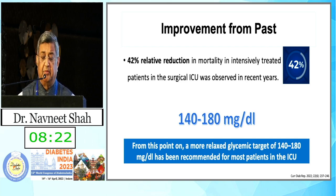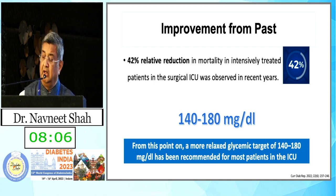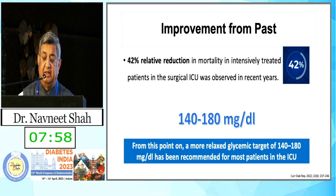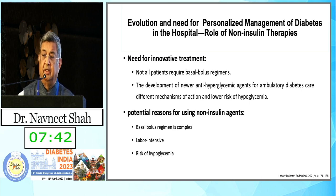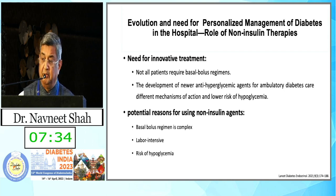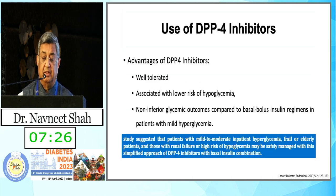We have seen a lot of improvement from the past, including a 42% relative reduction in mortality in intensively treated patients in surgical ICU. The current recommendation is that the target blood sugar in hospital should be around 140 to 180 mg/dL, with a more relaxed glycemic target recommended for most ICU patients. Good monitoring and prevention of hypoglycemia are essential, and the usual basal-bolus regime is complex, which led to the introduction of non-insulin therapies.